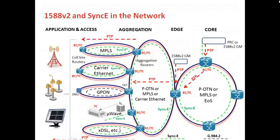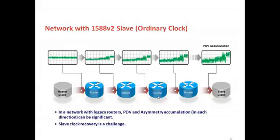In a real network, the master sits towards the core of the network, referenced to a time reference — for example by GPS — and then it sends packets through the network to the slave, which aligns its clock with that of the master. So what's the problem? What happens in an Internet or IP network is that you get accumulation of delay and delay variation. In a network with only a master and a slave, there is a collection of switches or routers in between. Routers queue packets in buffers, and that leads to variation in the delay that a packet takes through the network.